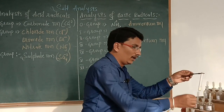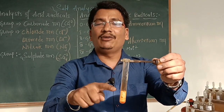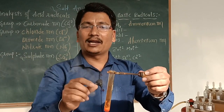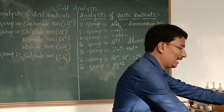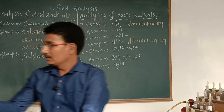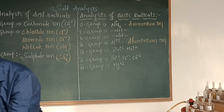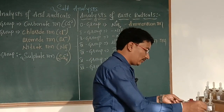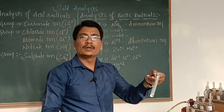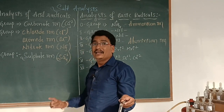If we observe white fumes only, chloride ion is present. If white fumes followed by reddish-brown pungent fumes are evolved, it indicates the presence of bromide ion. If reddish-brown fumes are evolved, bromide ion is confirmed. If there is no white fumes and no reddish-brown fumes observed, we need to conduct further testing.